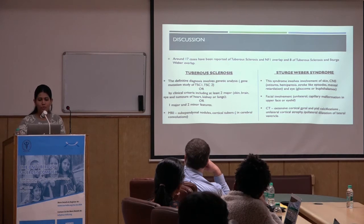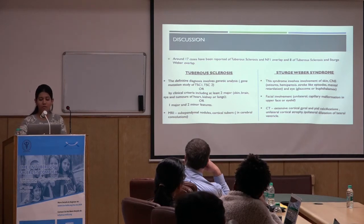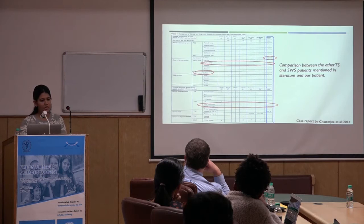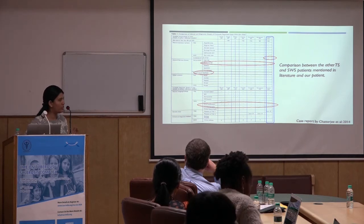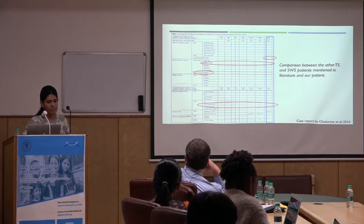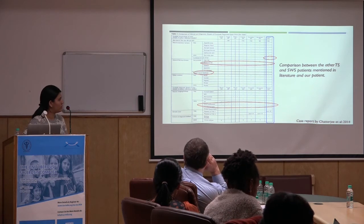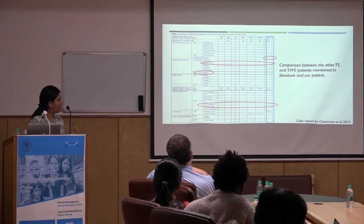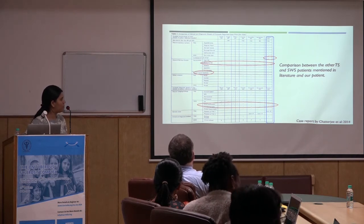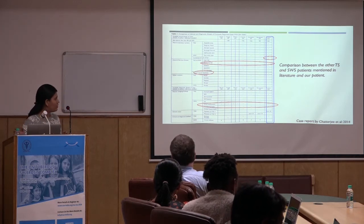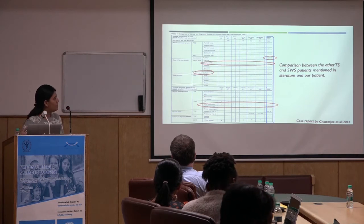The facial involvement is also characteristic in the form of port-wine stain, which is a leptomeningeal capillary malformation, and the CT scan will show extensive cortical, gyral, and gyral calcifications. This is a picture showing the patients in the literature — around eight patients including our patient with tuberous sclerosis and Sturge-Weber overlap. Comparing the features, it was found that profound mental retardation was found only in our patient, and sensorineural hearing loss was also documented in the patient who presented to us. Gyral and cortical calcifications were seen in around four of the overlapping patients, and it can be assumed that a patient having gyral cerebral calcification is more likely to have profound mental retardation.